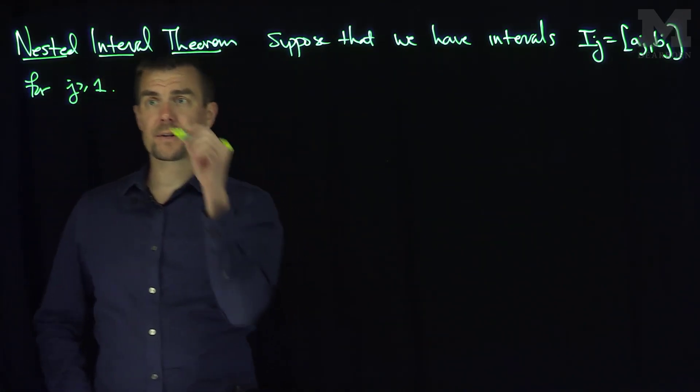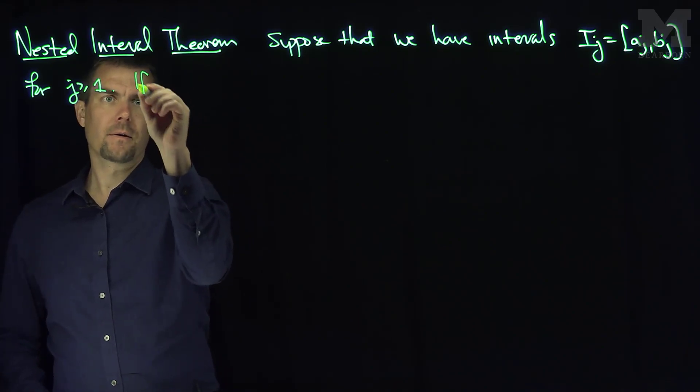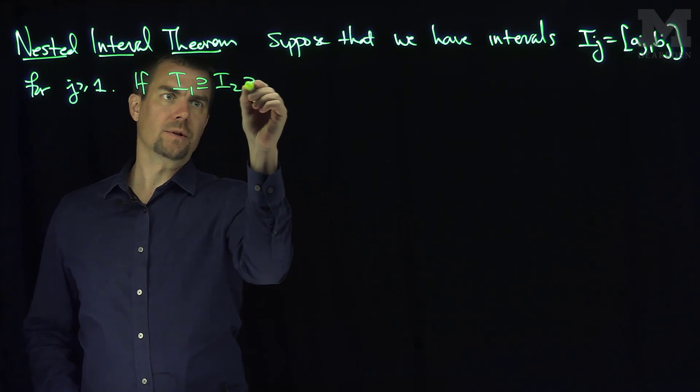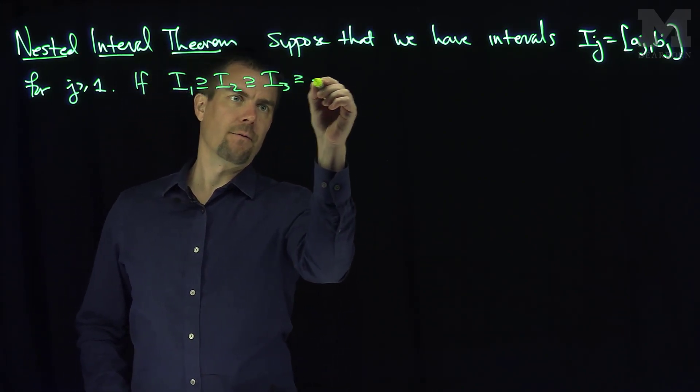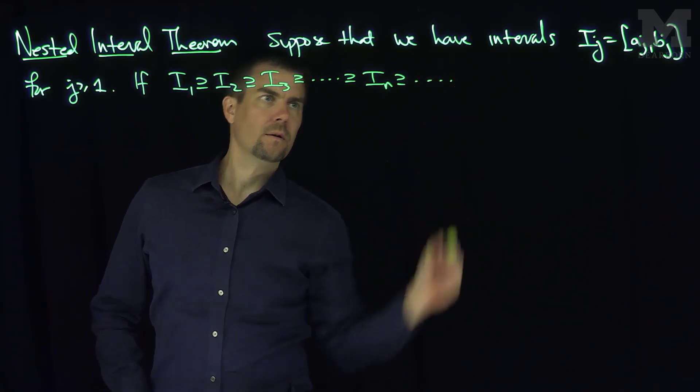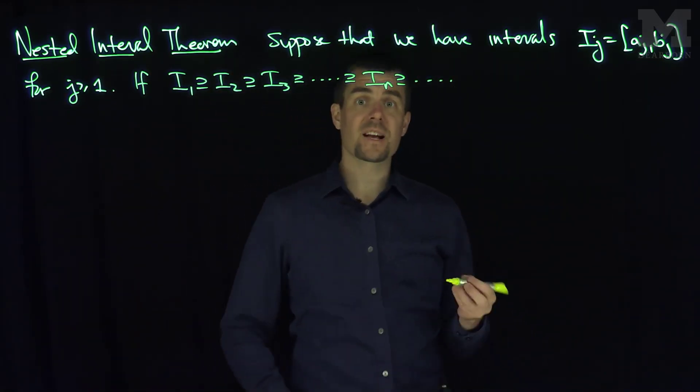And furthermore, we're gonna suppose that they're nested. If I1 contains I2, contains I3, contains I4, contains In, if they're all nested like this, it's a nested condition,